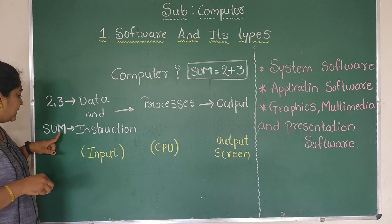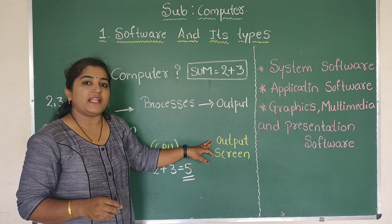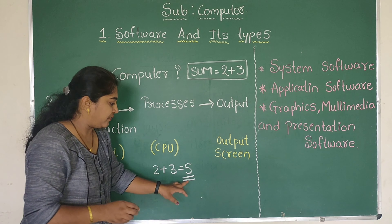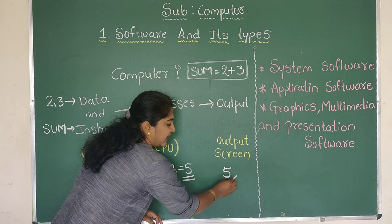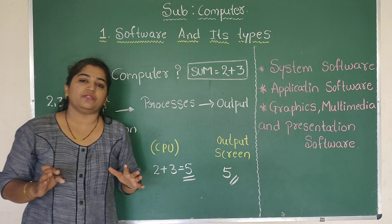Next, what will the computer do? It will process the data — that means it calculates. 2 plus 3 equals 5. That result is stored in memory and then it gives the desired output on the output screen. So, computer is an electronic device which accepts data and instructions, processes them, and gives a desired output.